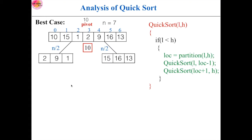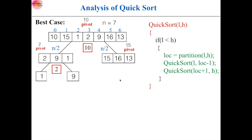Again, the partition algorithm will be applied on these two sub-arrays. It will take 2 as the pivot element — this is the proper position for 2, and 1 will be in the left sub-array and 9 will be in the right sub-array. In the same way, it will partition the right sub-array by selecting 15 as the pivot element — 13 will be in the left sub-array and 16 will be in the right sub-array. Now we're left with only one element, and sorting is done.